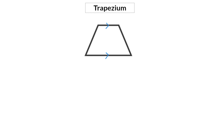And again, like with all the other polygons, the perimeter is the sum of all the sides. Let's go and have a look at where the formula for the area of a trapezium comes from.